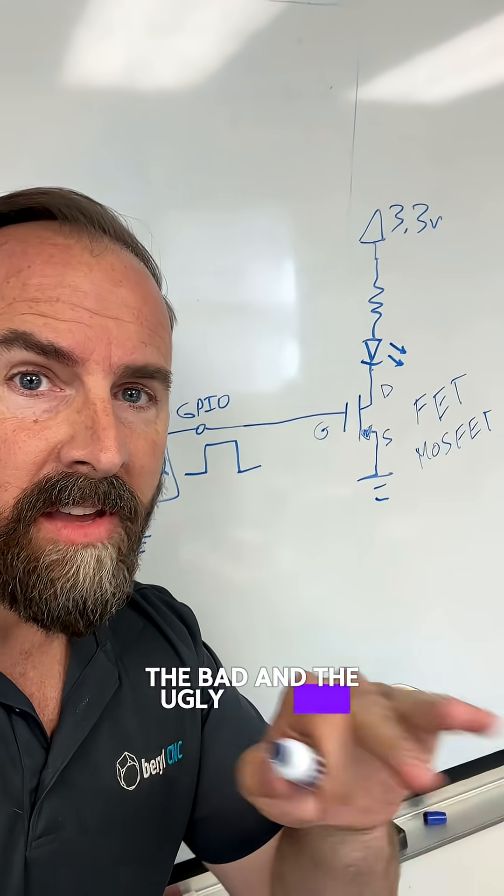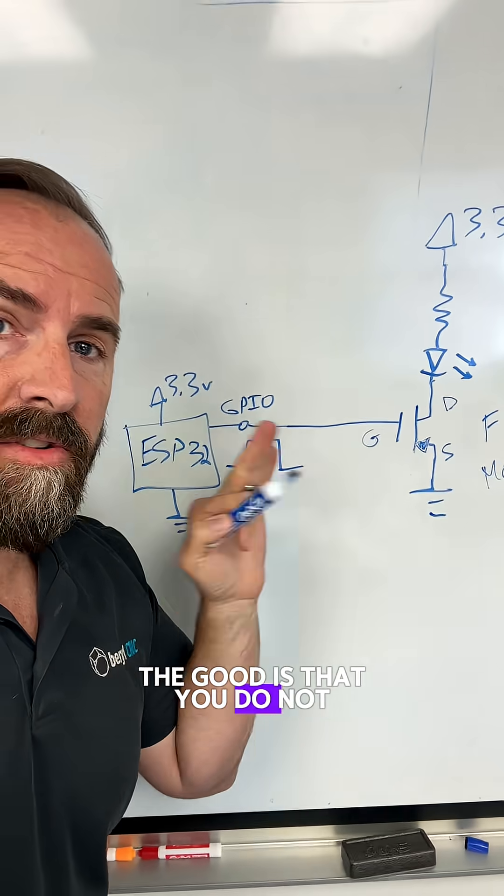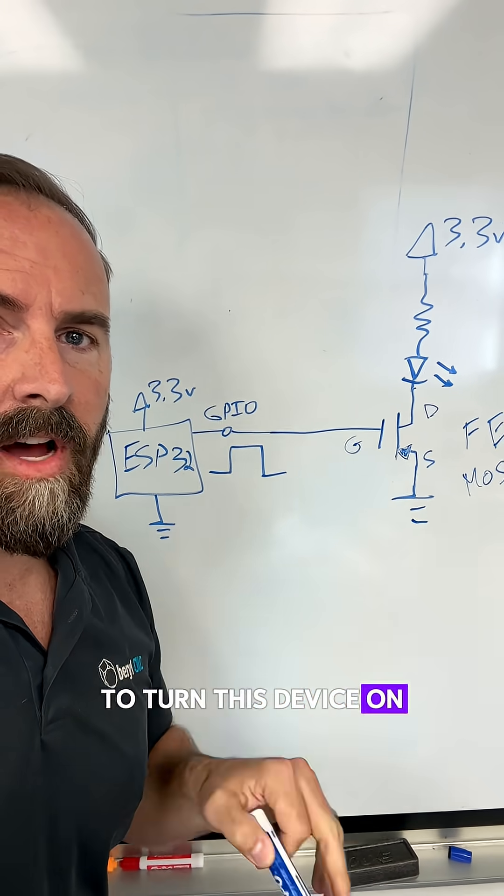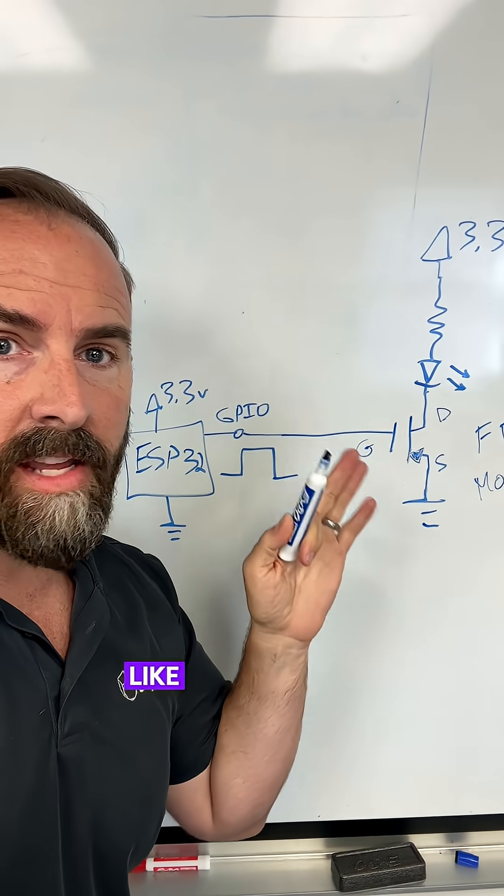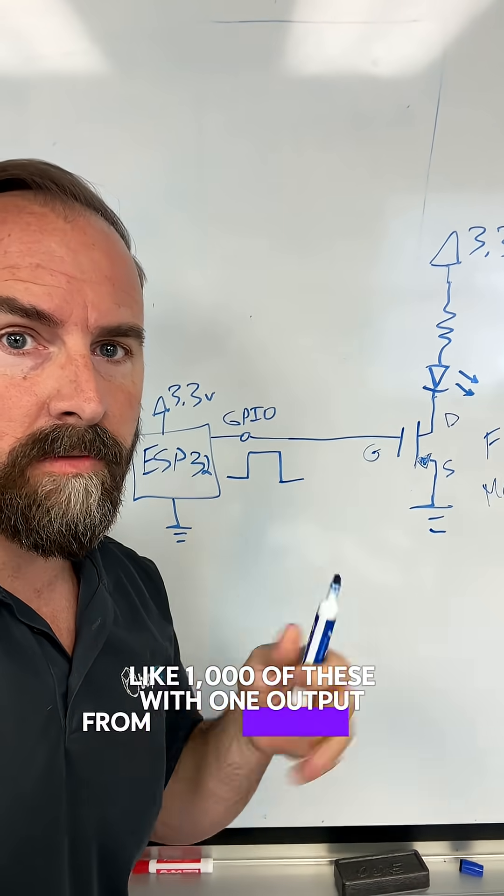Now let's talk about the good, the bad and the ugly of using a FET instead of a BJT. The good is that you do not need current to turn this device on. You can just do it with a field. So you can turn on like a thousand of these with one output from a microcontroller.